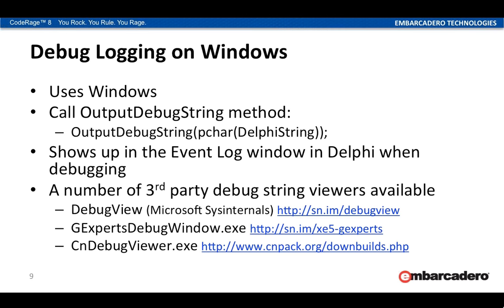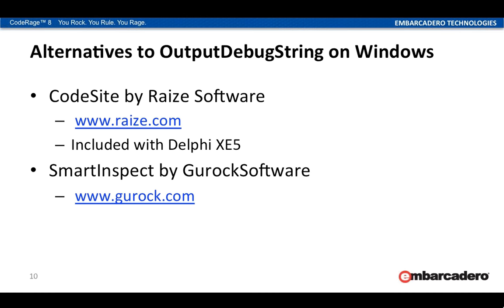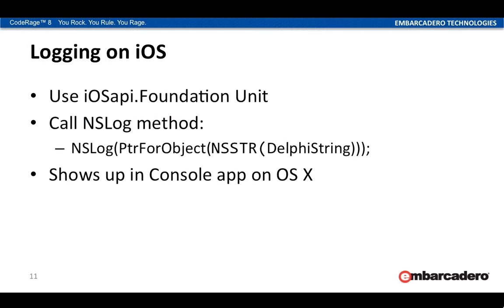It's actually interesting to run these and see what kind of information is popping up, since that can be left in shipping applications. There are a few alternatives to OutputDebugString on Windows: CodeSite by Raize Software and SmartInspect by Gurock Software. CodeSite is actually included with Delphi XC5, or you can get the full version at raize.com. Gurock Software is at gurock.com. These two utilities go beyond basic logging and provide a higher level of logging as well as special log trackers.